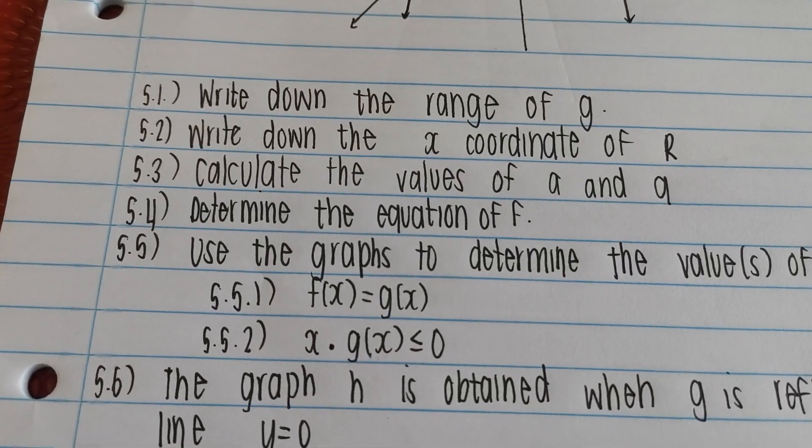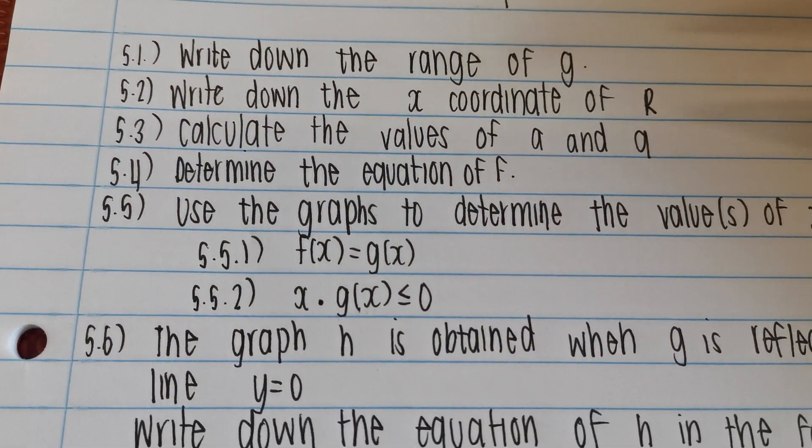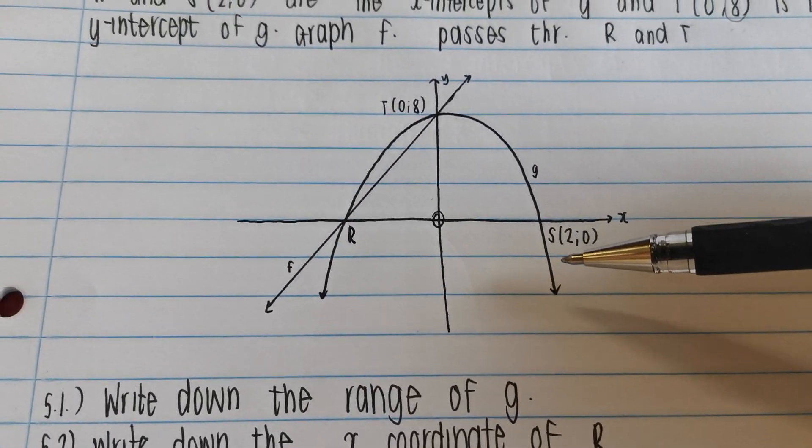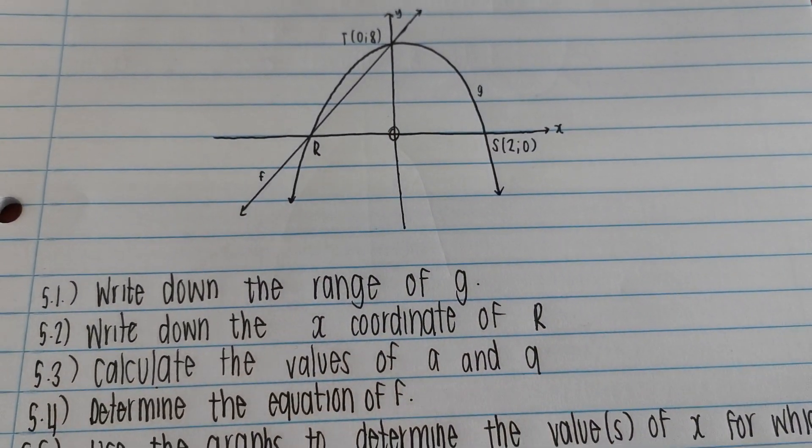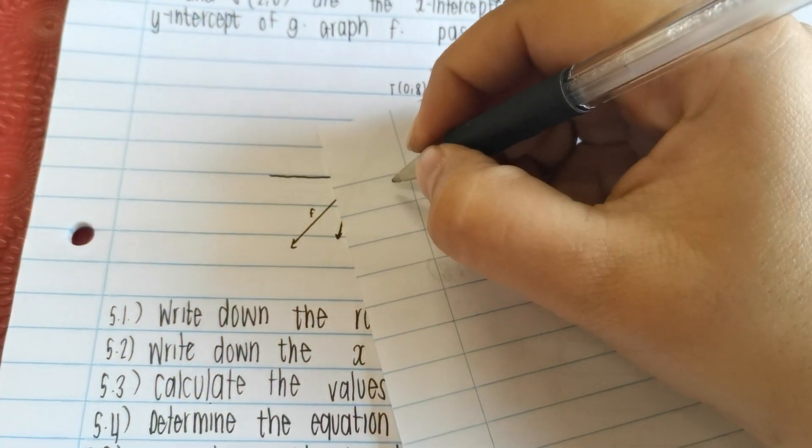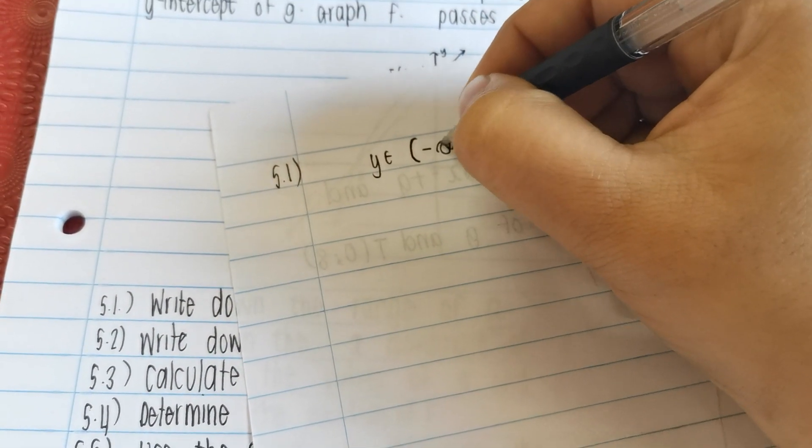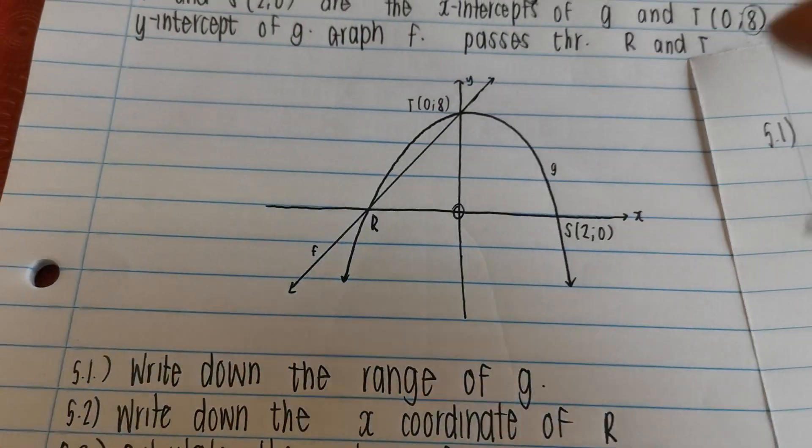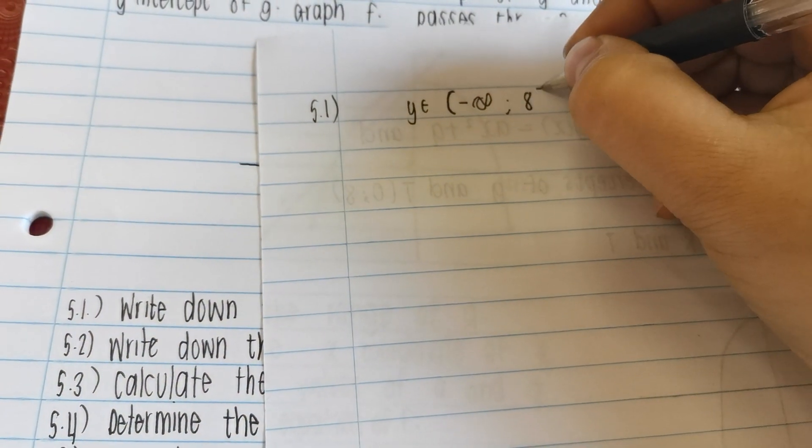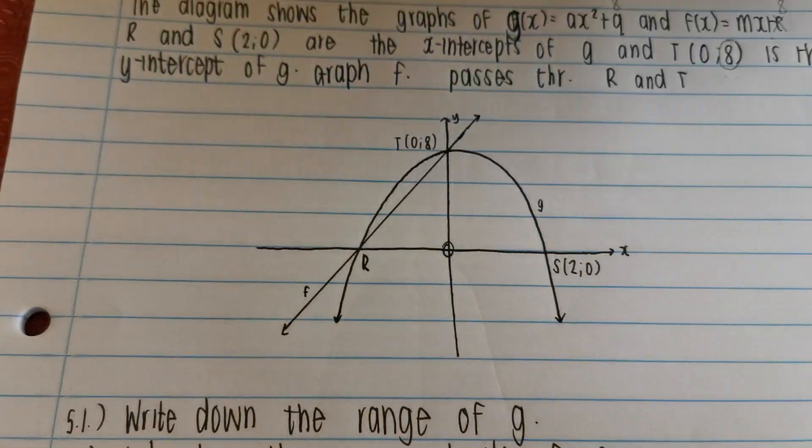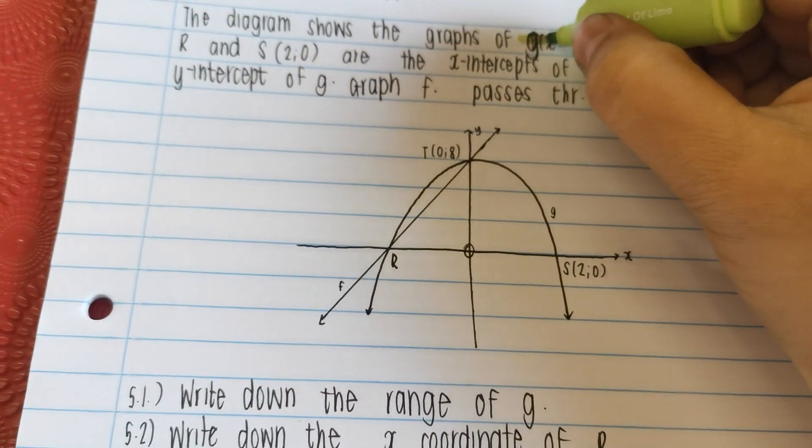Let's answer the first question. It says write down the range of g. What do we know is the range? We know it's all the possible y values that it could be. So let's look at this graph over here. What is the lowest value that this graph can go to? Do you agree with me that because of these arrows, it continues all the way down to negative infinity? Let's write down our answer. 5.1, y is an element of lowest value it can go to, negative infinity. Highest value that this graph can go to, can you see g? We're only concerned with g. It's 8.